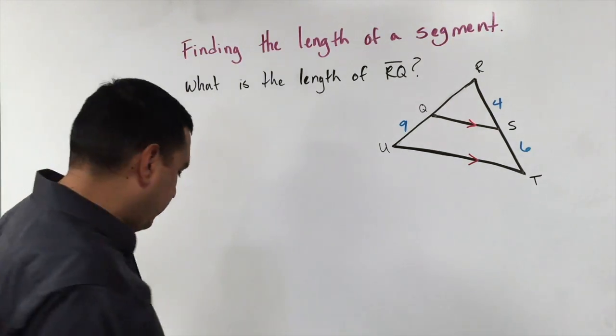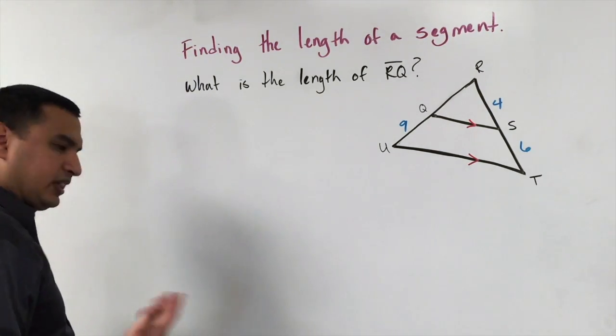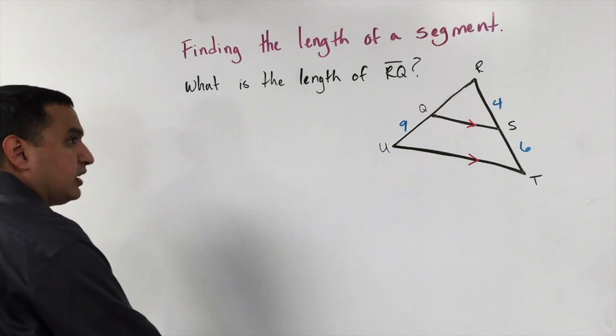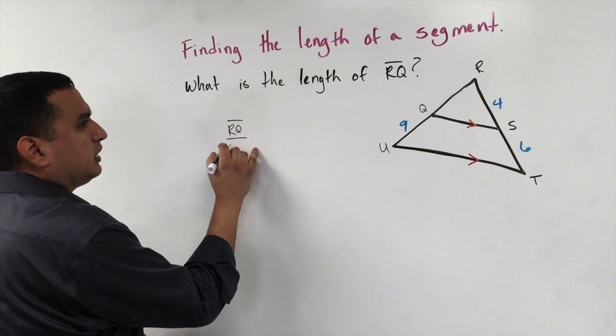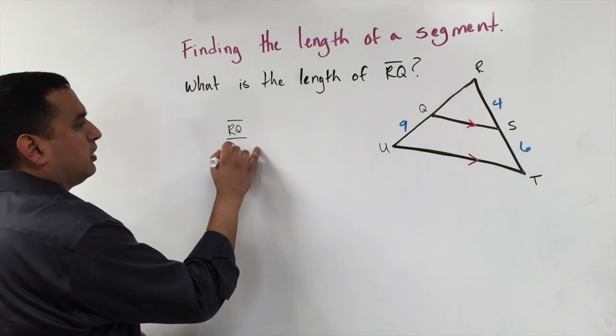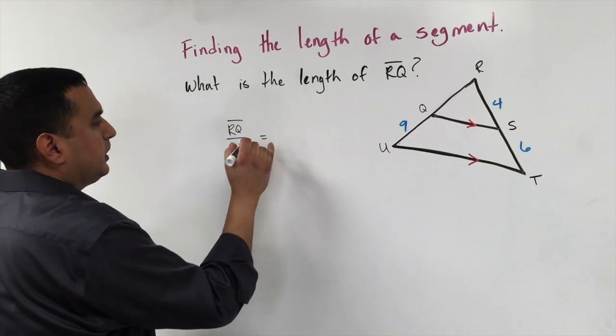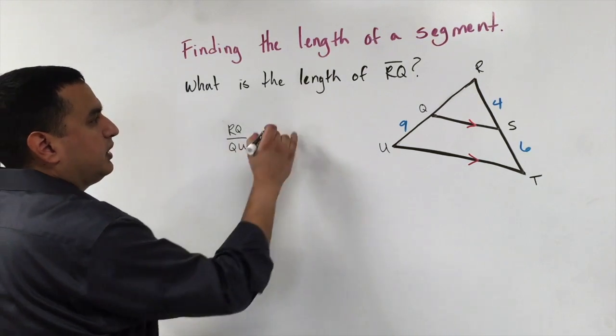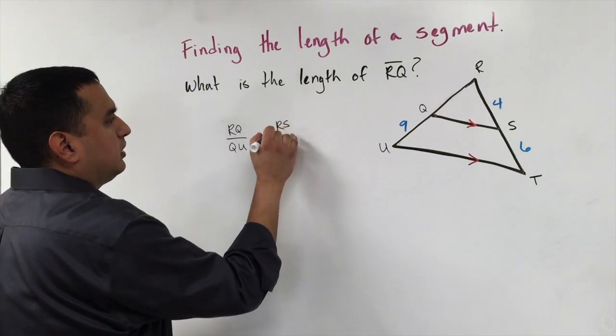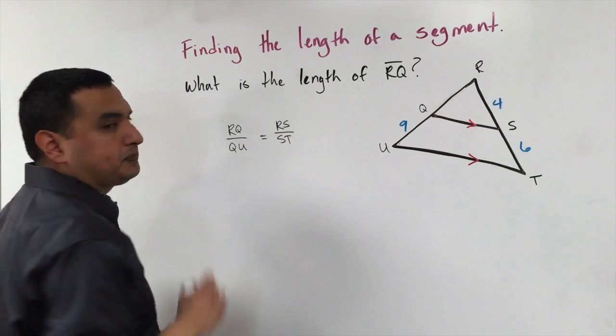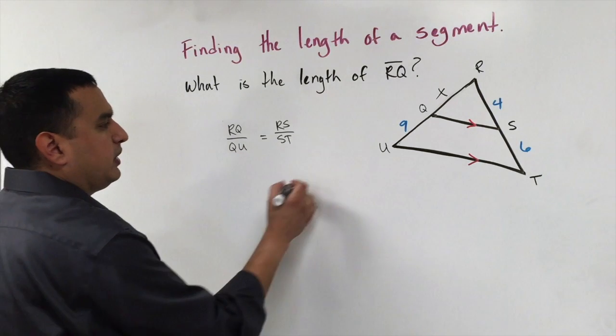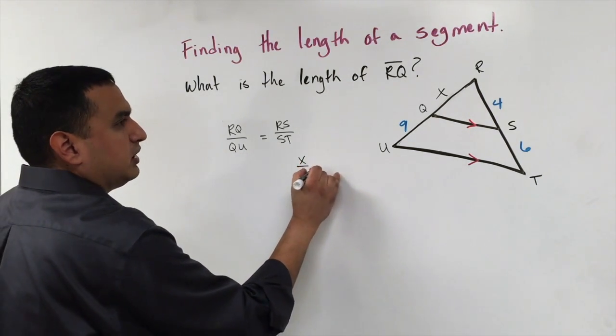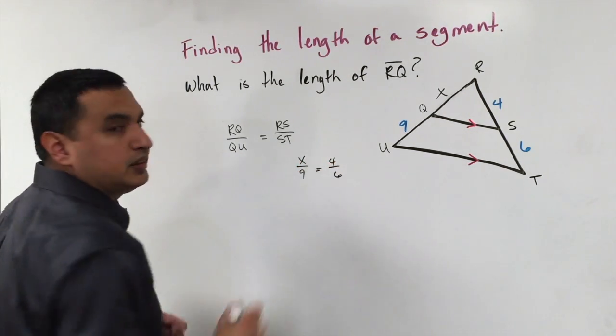I can say that RQ, segment RQ over segment QU is equal to the length of RS over ST. Which just means if I label this as X and I put in my values, I'll have X over 9 is equal to 4 over 6.